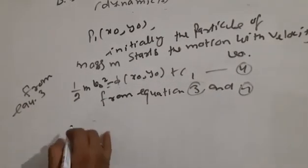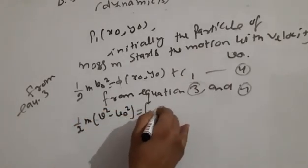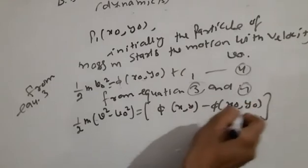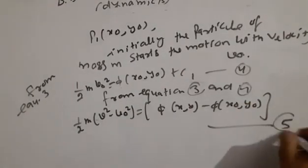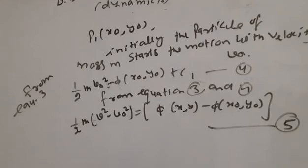Subtracting equation 4 from equation 3, with C₁ cancelling out, we get: (1/2)·m·(v² - v₀²) = φ(x,y) - φ(x₀, y₀). This is equation number 5. The change in kinetic energy equals the work done by the external forces, where φ is the work function.